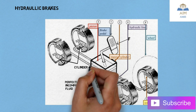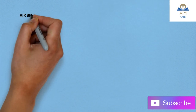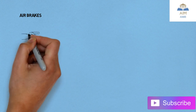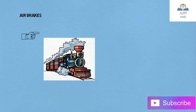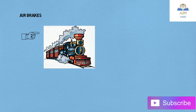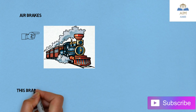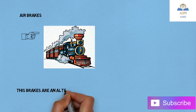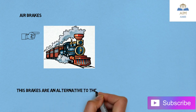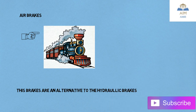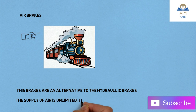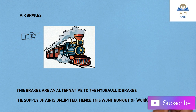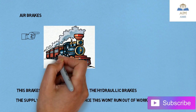The next one is the air brakes. As the name mentions, air is the main important medium, which is mainly used in railways. These brakes are the alternatives to the hydraulic brakes. The supply of air is unlimited, and hence this won't run out of the working media — the working media in this case is air, whereas in the previous one it was oil.